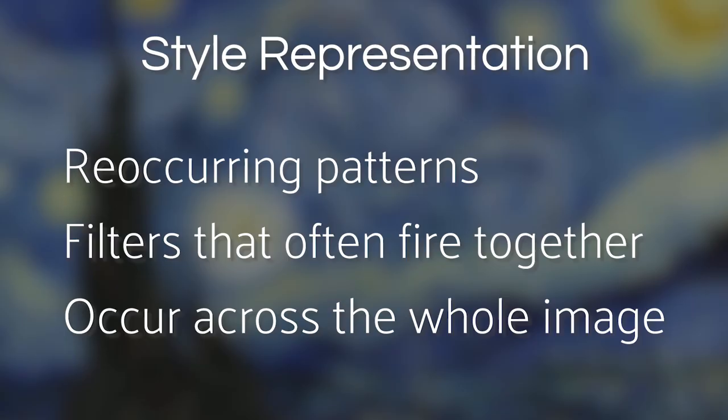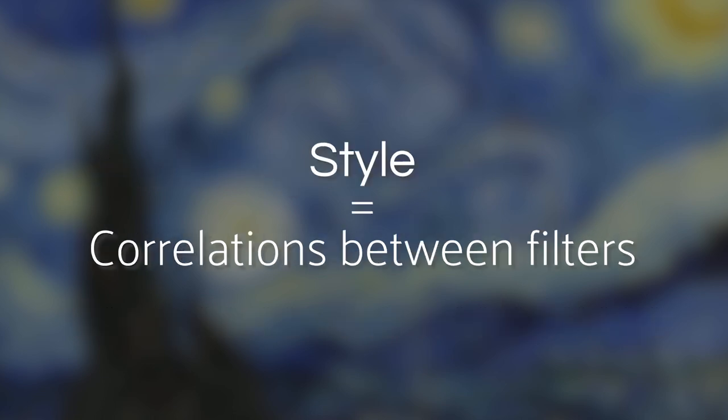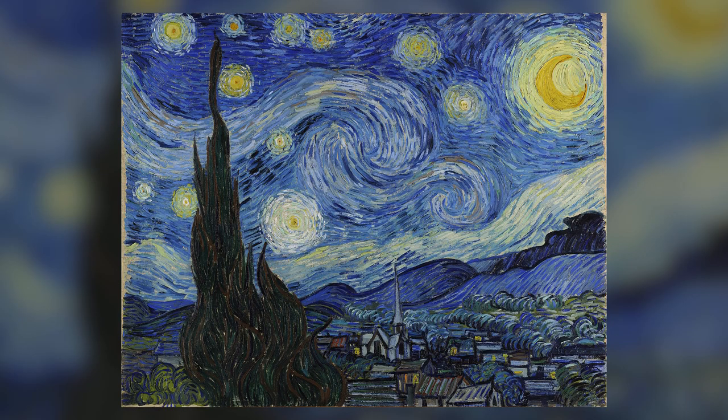A neural network might look at an artist's image and see what patterns occur frequently together throughout the image. This is done by comparing the activations of different filters across the whole image, and seeing which ones fire together.